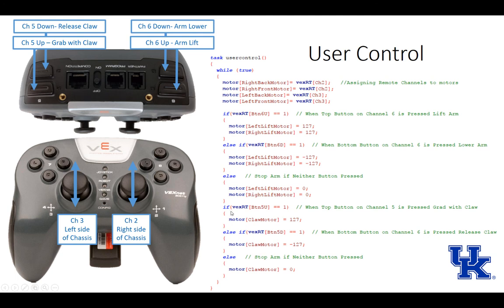I'm going to do the same thing on my other side where if my VEX remote channel for five equals one, so if it's pressed, I'm going to start turning my motor. Else if the bottom one's pressed, I want to set it to negative 127, so releasing. And else, I'm going to set my motor equal to zero.